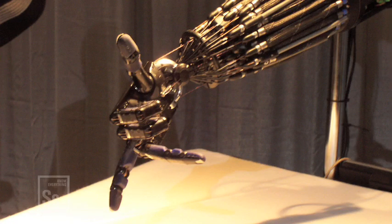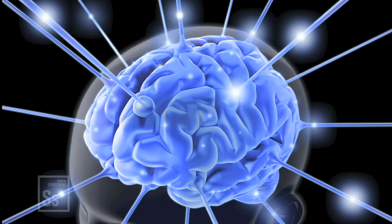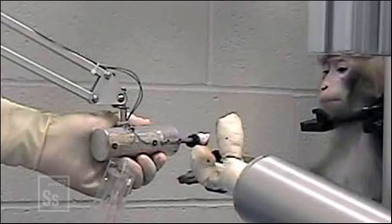Step one, give the monkey a joystick that controls a robotic arm. Step two, record brain signals. Step three, cut the connection between the joystick and the robot, and voila, the robotic arm will continue to move by reading signals coming directly from the monkey's mind.